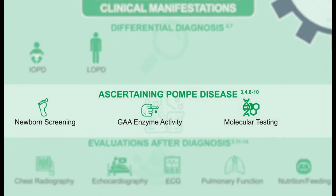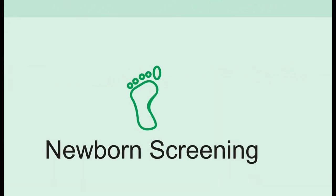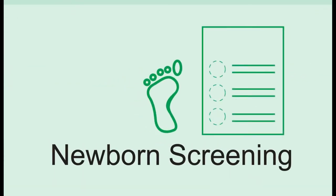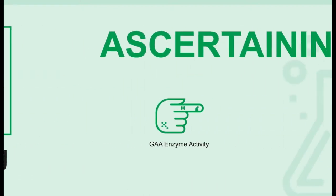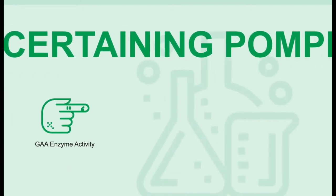Ascertaining Pompe disease can be via different avenues. More recently, newborn screening has become available in some states. An important point: a single abnormal newborn screening result is not regarded as sufficient for diagnosis of Pompe disease. Clinicians can begin a diagnostic workup by sending enzyme activity measurement for GAA, which can be performed on dried blood spots in some labs.